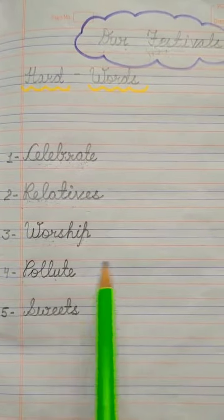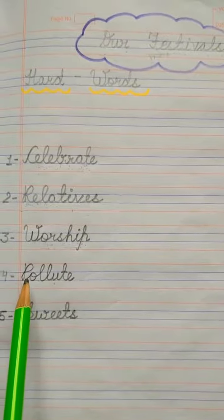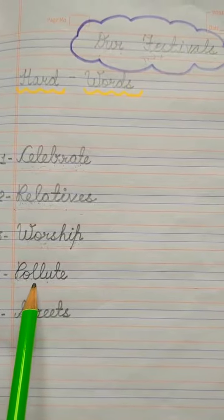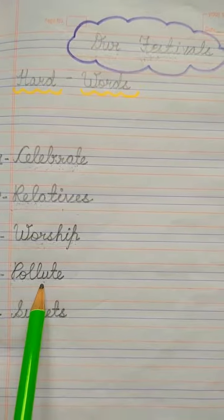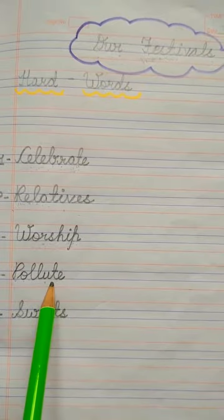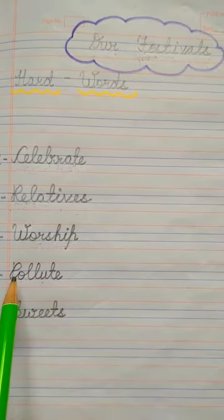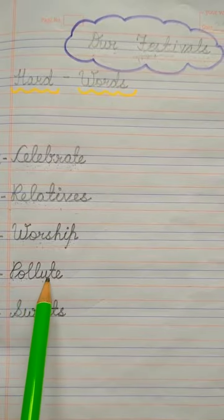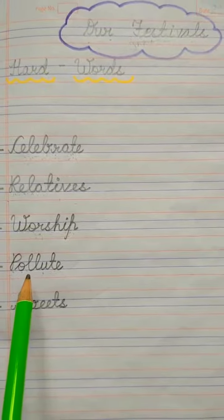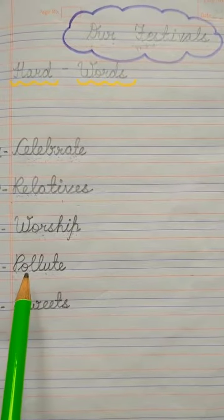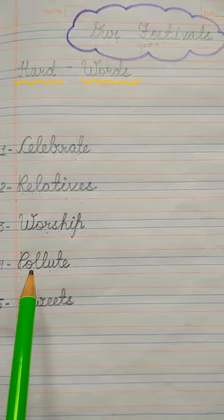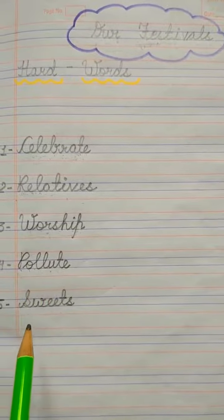The fourth word is P-O-L-L-U-T-E — Pollute. Pollute means doing something dirty, kisi bhi cheez ko ganda karna, like air pollution, water pollution, and different types of pollution.